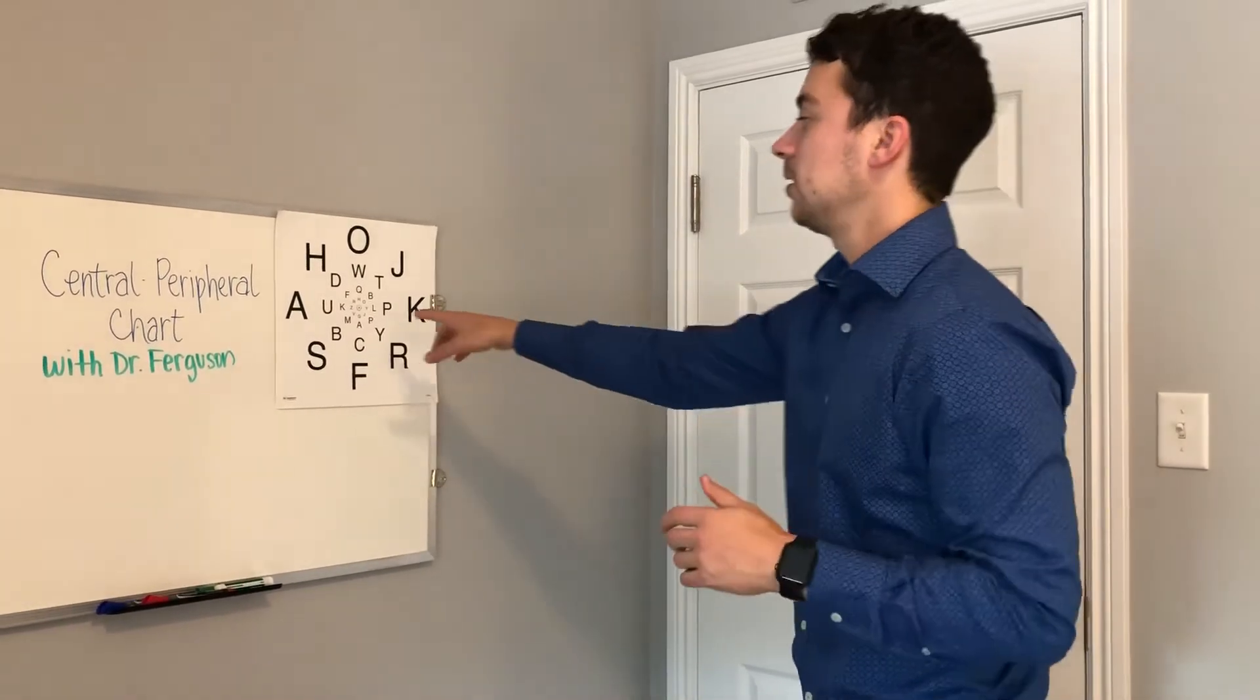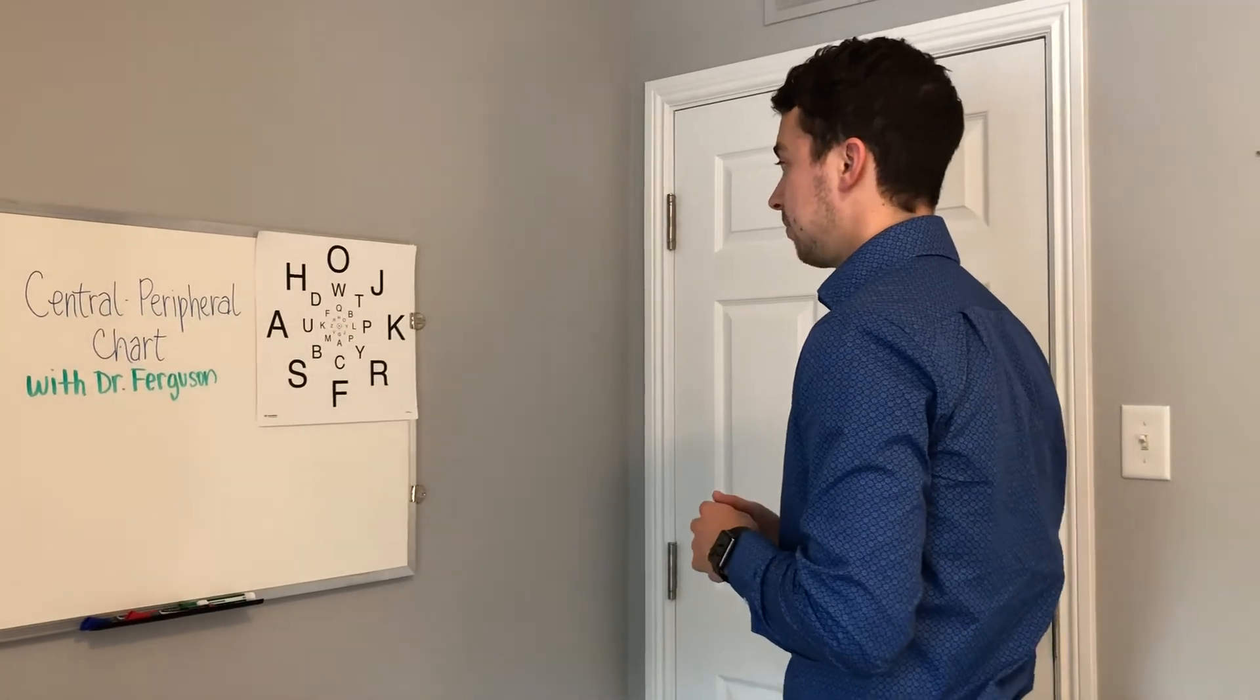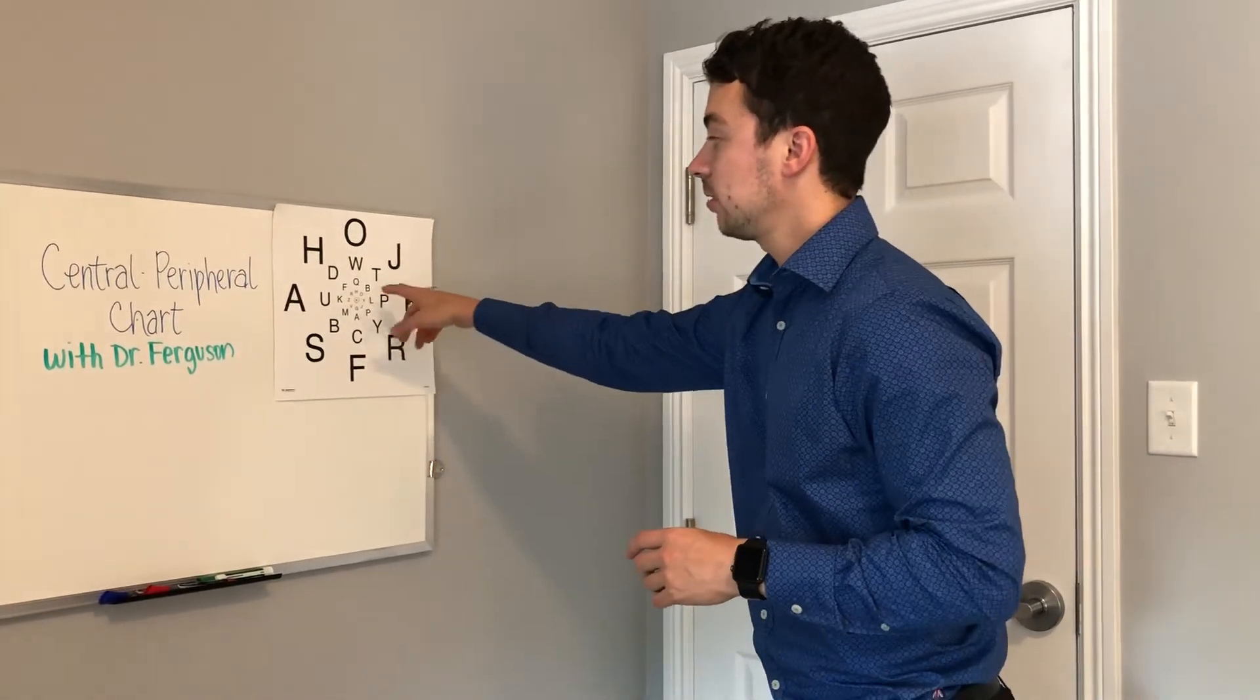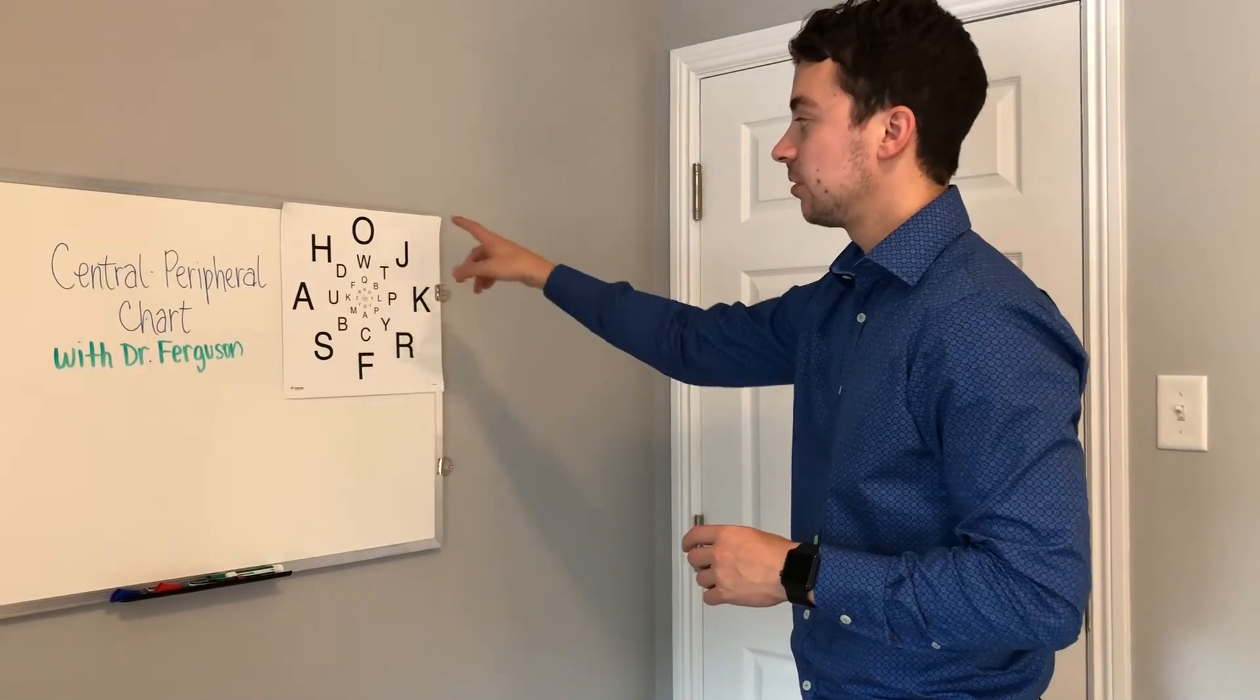I'm going to start with the smallest circle here of letters, so I'll say C-A-M-T-W-B-O-N, and then you're going to go to the next circle of letters and keep going around and around until you're at the very outside.